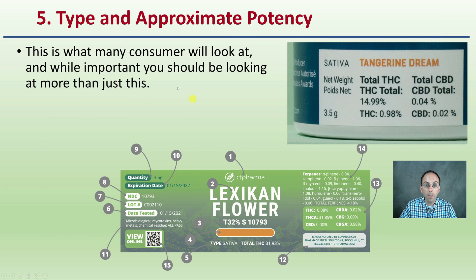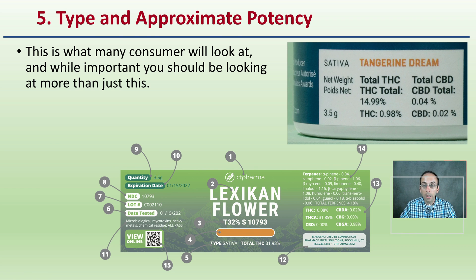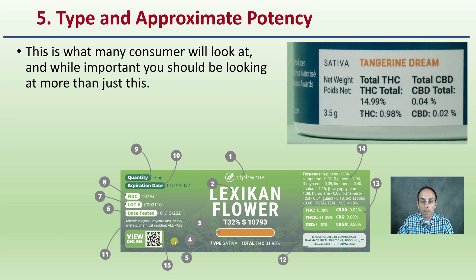Number five is type and approximate potency. While many consumers will look at this, and while it is important, you should be looking at more than just this — more than just 'it's a sativa at 31.93% THC.' You need to be looking at even more detail. But it does provide you with some idea of what you're purchasing. The method of organization may look a little different on other labels, but this is a nicely outlined label.